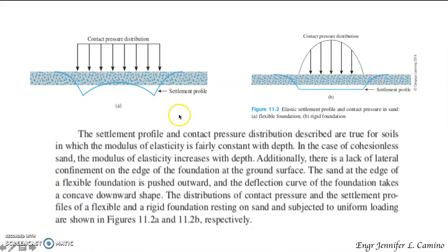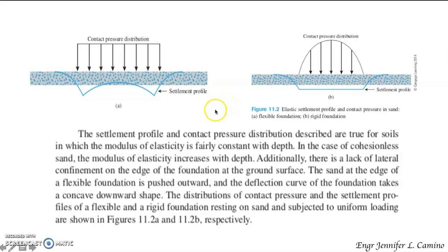The settlement profile and contact pressure described are true for soils in which the modulus of elasticity is fairly constant with depth. Now we look at the elastic settlement profile and contact pressure in sand. For cohesionless sand, the modulus of elasticity increases with depth. Due to the lack of lateral confinement at the edge of a flexible foundation at the ground surface, the sand at the edges is pushed upward and the deflection curve takes a concave downward shape.